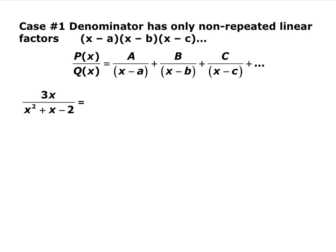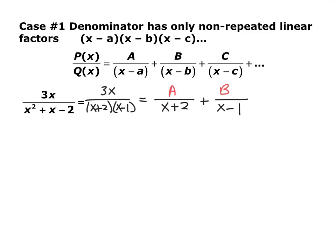There are a few different cases. The first case is if the denominators have non-repeated linear factors. The first thing you always want to do is factor the denominator as much as possible. If we factor x squared plus x minus 2, it factors into x plus 2 times x minus 1 — two distinct linear factors. When you have that, the sum is one fraction for each denominator, with constants in the numerators: a over x plus 2 plus b over x minus 1.